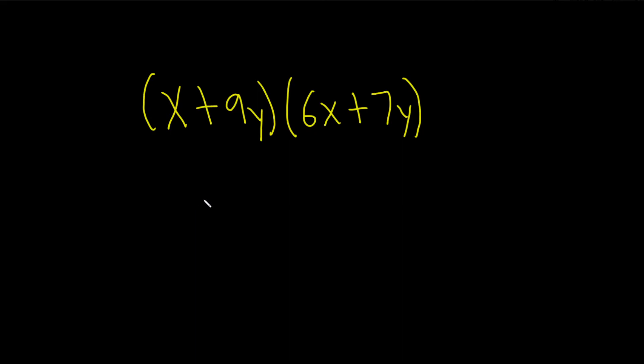Find the product. In this problem we're just going to use regular distribution. How that works is you just take this x and you multiply it by both of these. Then you take the 9y and you multiply it by both of these.